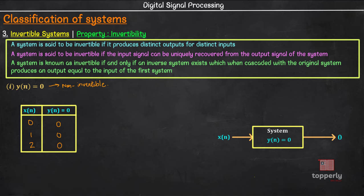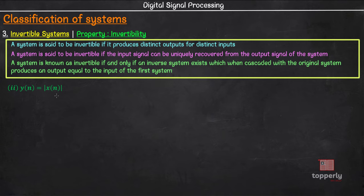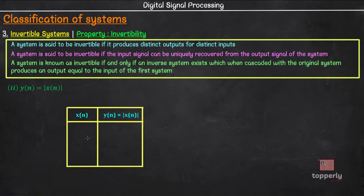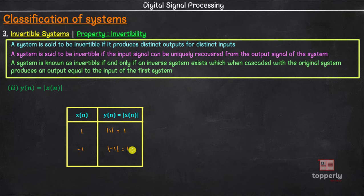Let us now see another example: y[n] = |x[n]|. We will proceed just like before. Let the input be 1; the corresponding output will be |1| = 1. Next, let us provide an input of −1; the corresponding output will be |−1| = 1. So both 1 and −1 are producing the same output. Again, distinct inputs failed to produce distinct outputs. So this is again a non-invertible system.